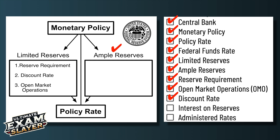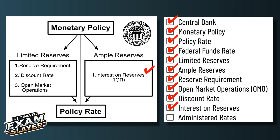But when there are ample reserves, those other ones don't really work. So the central bank has only one option, which is increasing or decreasing the interest on reserves — the interest that commercial banks earn by depositing money with the central bank. Both the discount rate and interest on reserves are called administered rates, and the central bank has direct control of them.